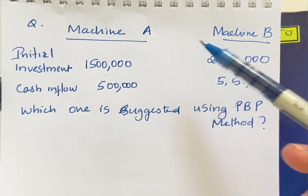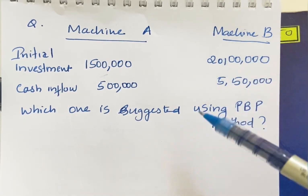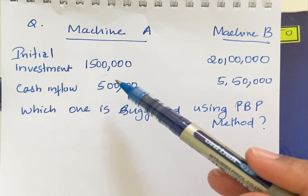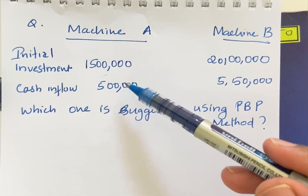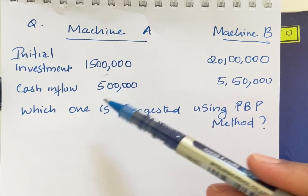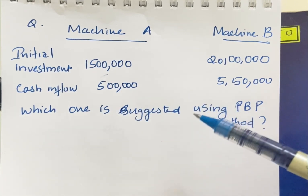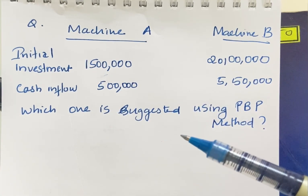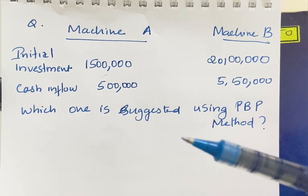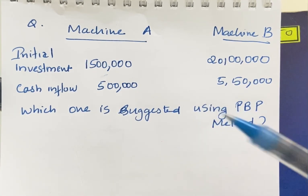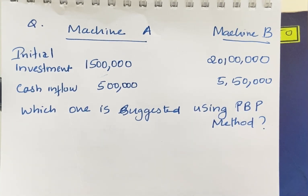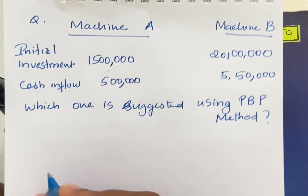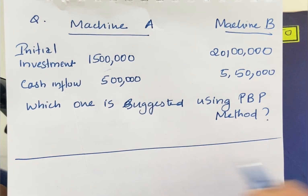There are two machines, A and B. We have cash inflows and initial investment. First, we will take the payback period. We will choose anything to choose. Let's go to a table.